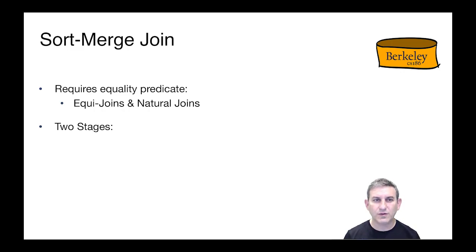The next join algorithm we'll look at is the sort merge join. This only applies to equi-joins and natural joins, that is, joins where there's an equality predicate in the theta.